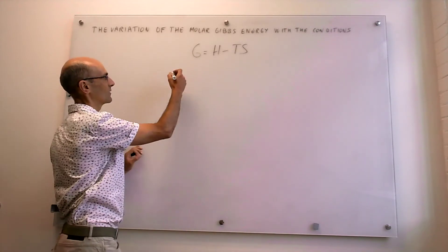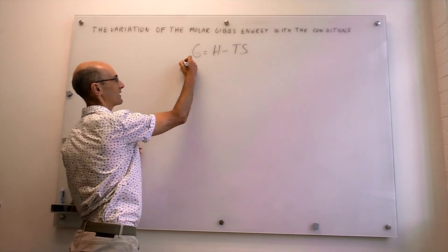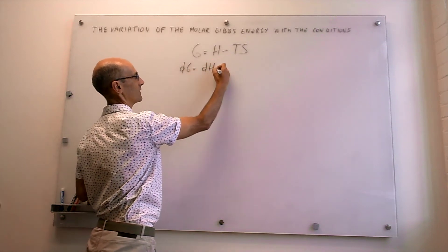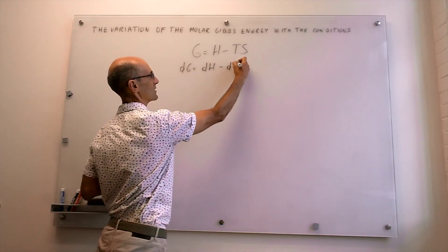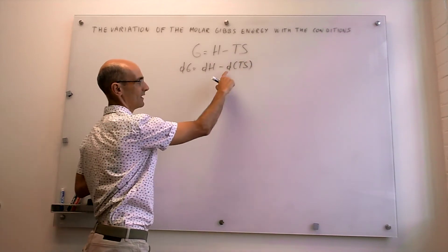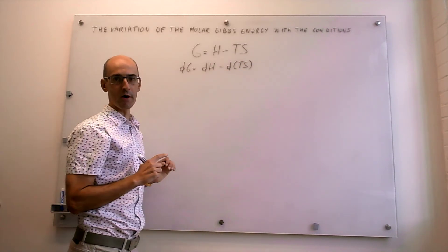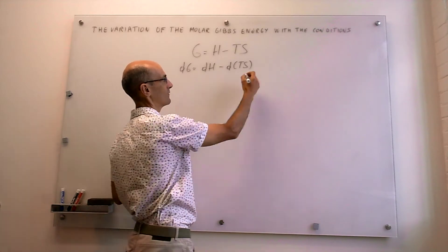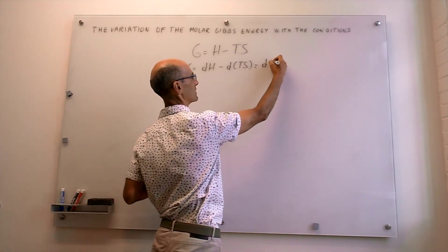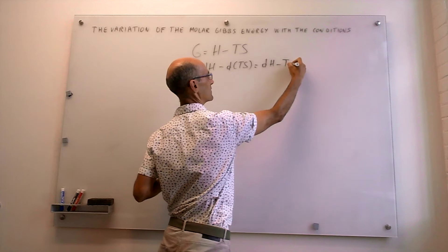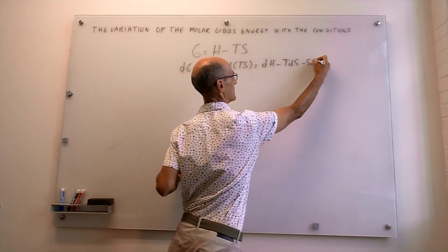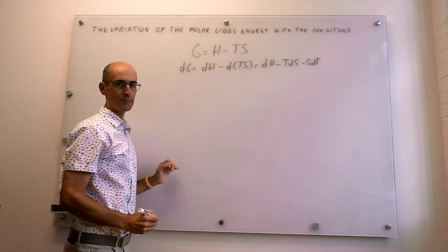Let's get started. Taking total derivatives, we get the enthalpy minus the differential of T multiplied by the entropy. We have to use the product rule of derivatives here, giving us: dH minus T·dS minus S·dT.